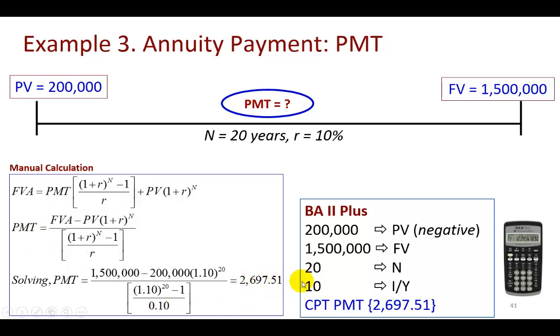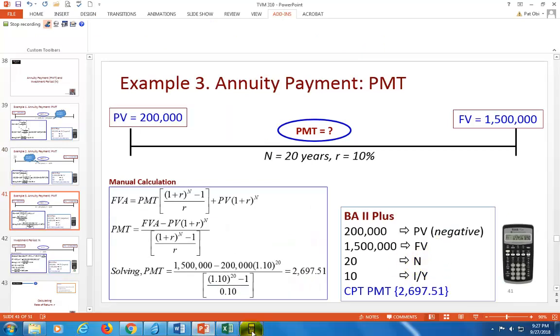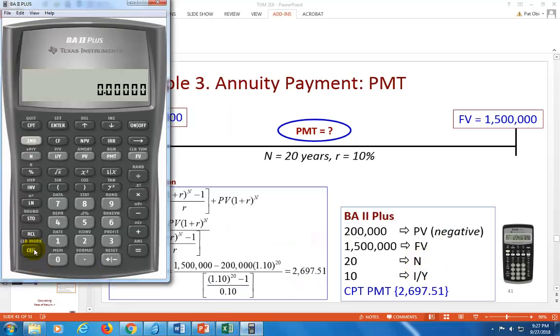But if you don't like the algebra, well then let's do it the BA II Plus way. Clear the screen, second clear TVM, second clear work. $200,000 with a negative—it's our PV—and $1.5 million is going to be our FV. 20 is going to be our N and 10 is going to be our I over Y, and we compute payments.